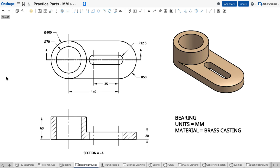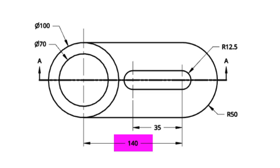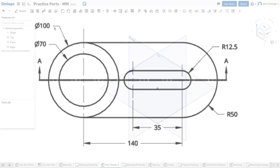In this project we're going to create a part called a bearing. For my construction technique I immediately noticed that the center points of the circles that make up this part are going to be my prime sketch points. The outside circle has a diameter of 100, the inside circle 70, and the distance between the circle centers that make up each end is 140 millimeters.